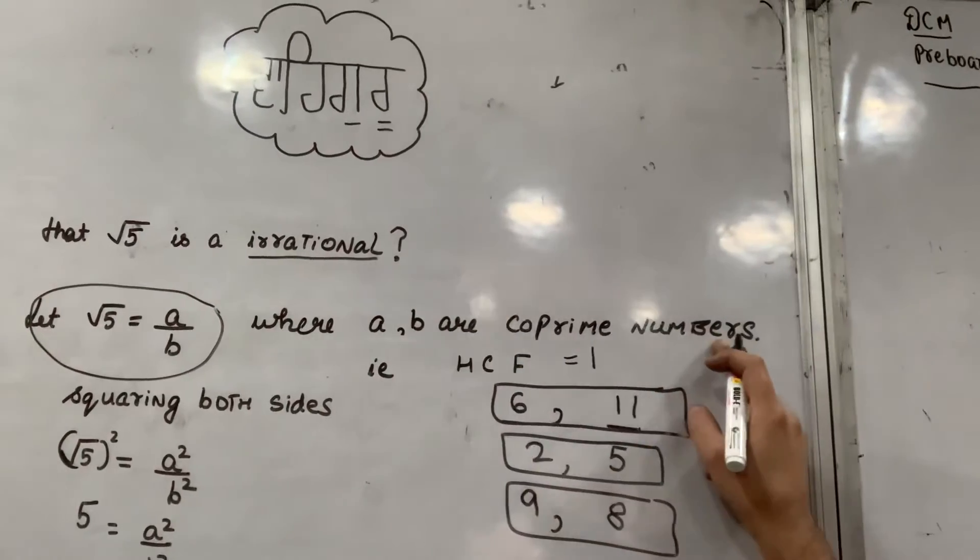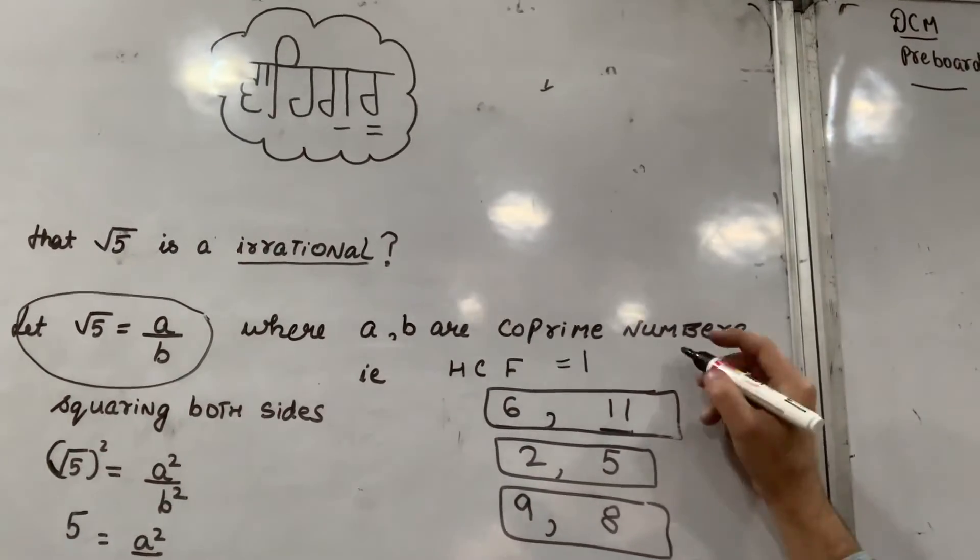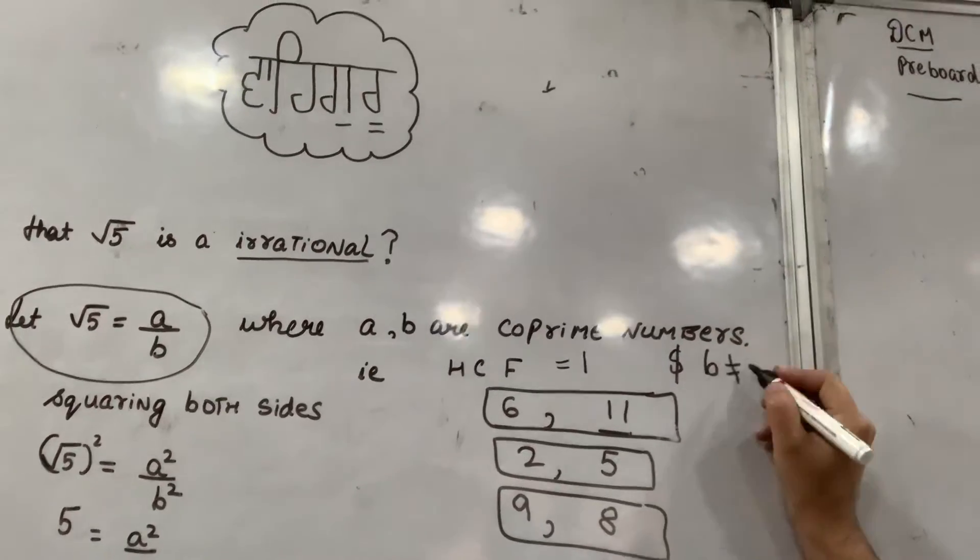A and b coprime means HCF of 1, and b is not equal to 0.